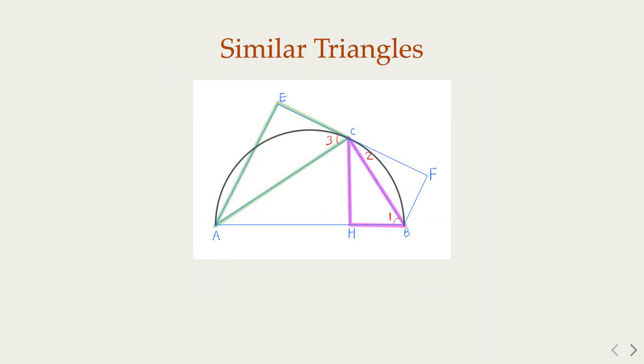So here, the highlighted triangles are similar. Why? Again, from the earlier theorem, we know that angle 3 equals angle 1. And both are right triangles. I have angle-angle, so the two triangles are similar.